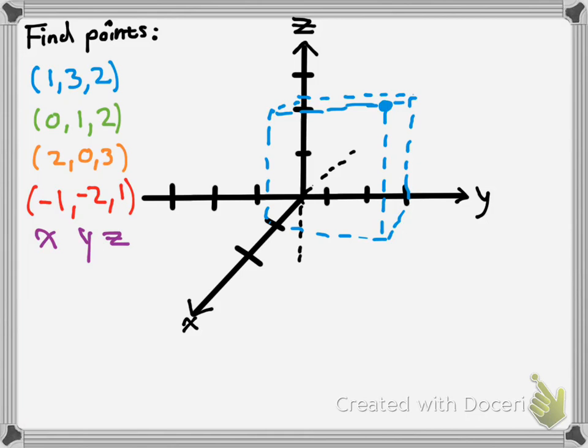Second point, in green — we have 0 on the x-axis, 1 on the y-axis, and then up 2. So it's right there, and that would be a little something like that.